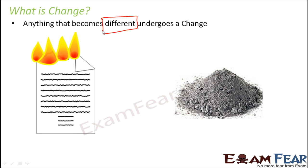Let's look at this example on the screen. We see a piece of paper — rectangular, white in color, with something written on it. That is its shape, size, appearance, and texture. When I burn this paper, what do I get? I get ashes. The ashes look nothing like the paper — they are like powder, grayish-black in color. Their shape, size, color, and texture are all different from the paper. The process of burning changed one object into another. This is an example of change.